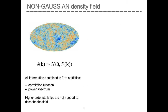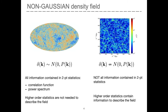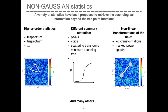For a Gaussian field, all the information is contained in its two-point statistics. However, the low-redshift matter and galaxy fields are non-Gaussian due to gravitational evolution. Therefore, there is additional information beyond the two-point functions that are commonly used as standard probes in cosmology. Many additional statistics have been proposed to retrieve the additional information beyond the two-point functions.